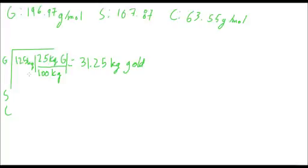So here for the gold, we take a total mass times the 25 kilograms of gold per 100 kilograms, 100 kilograms total, 25%, in other words. And that gives us a mass of 31.25 kilograms of gold in this piece of ore.